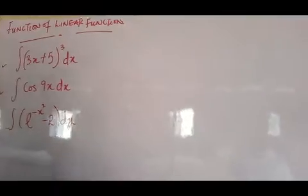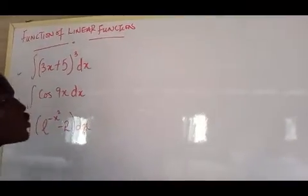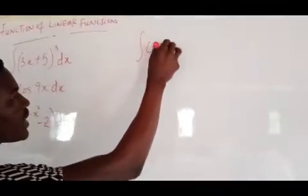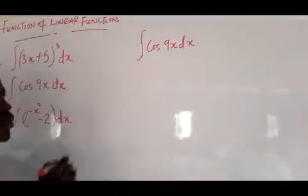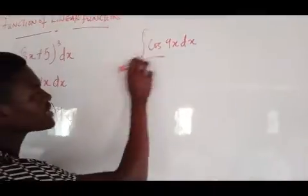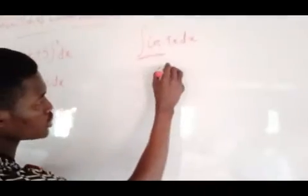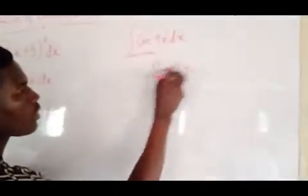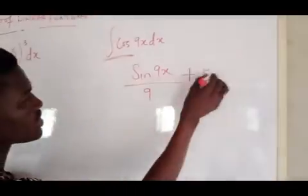Don't forget to subscribe, like and share this video — I'm talking about function of linear function. For the second example, we have the integral of cos(9x) dx. This is also very simple. The first thing you do is integrate your cos — if you integrate cos, you get sine — so write your 9x back, over the differential of 9x, which gives 9, plus c.